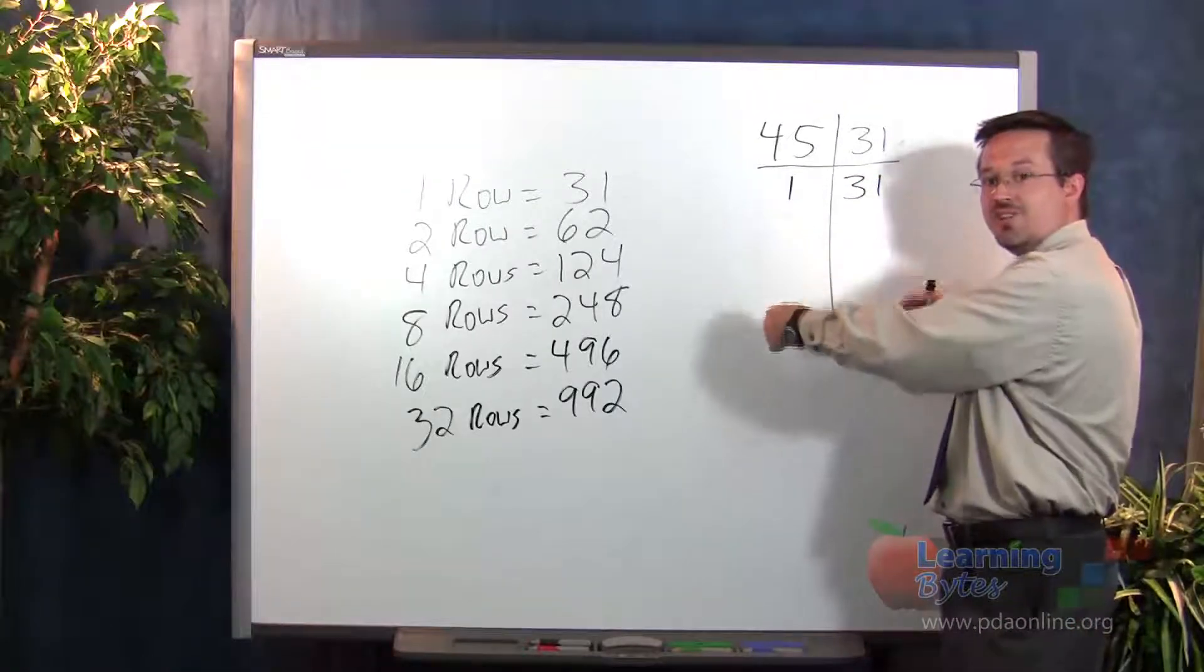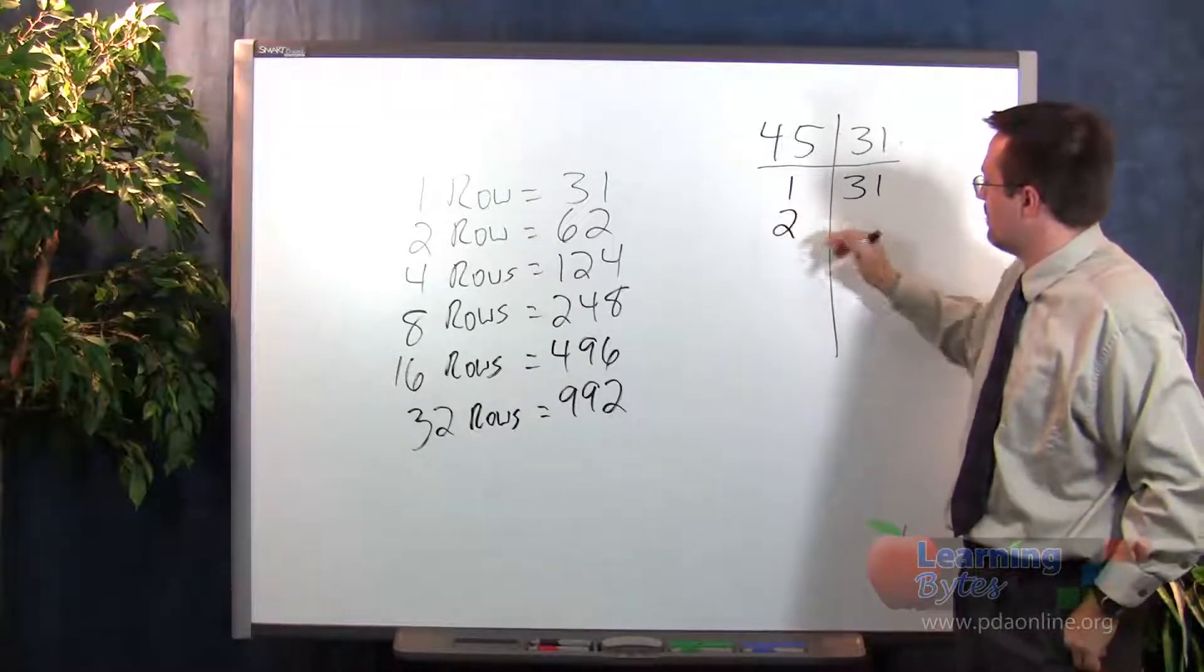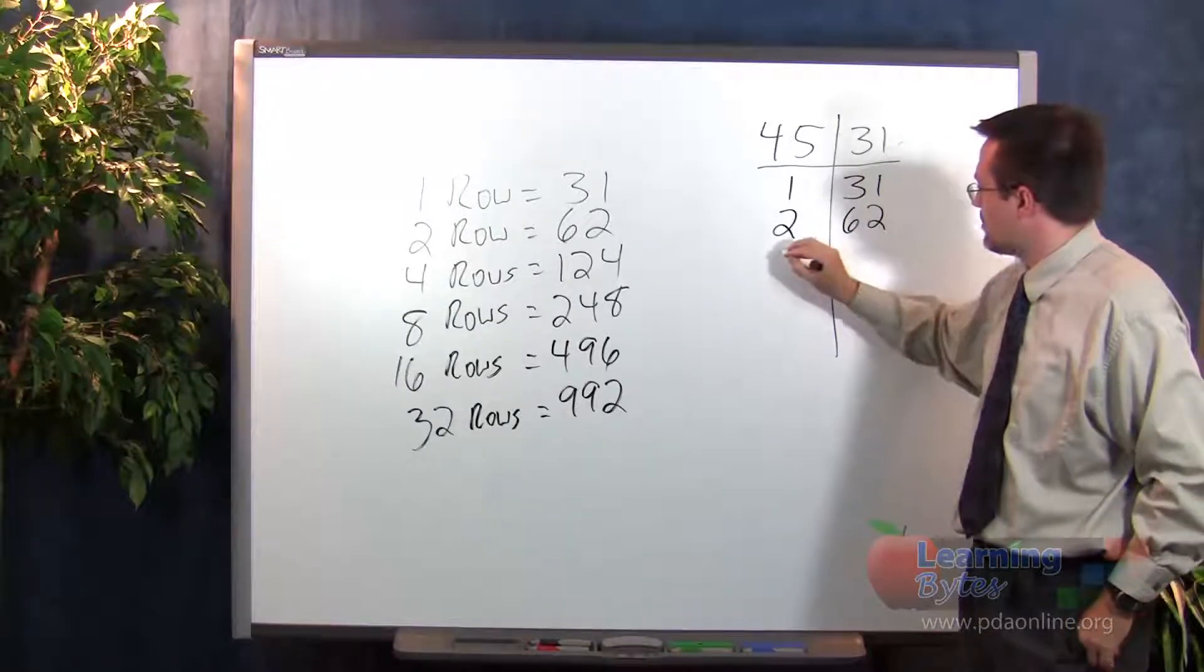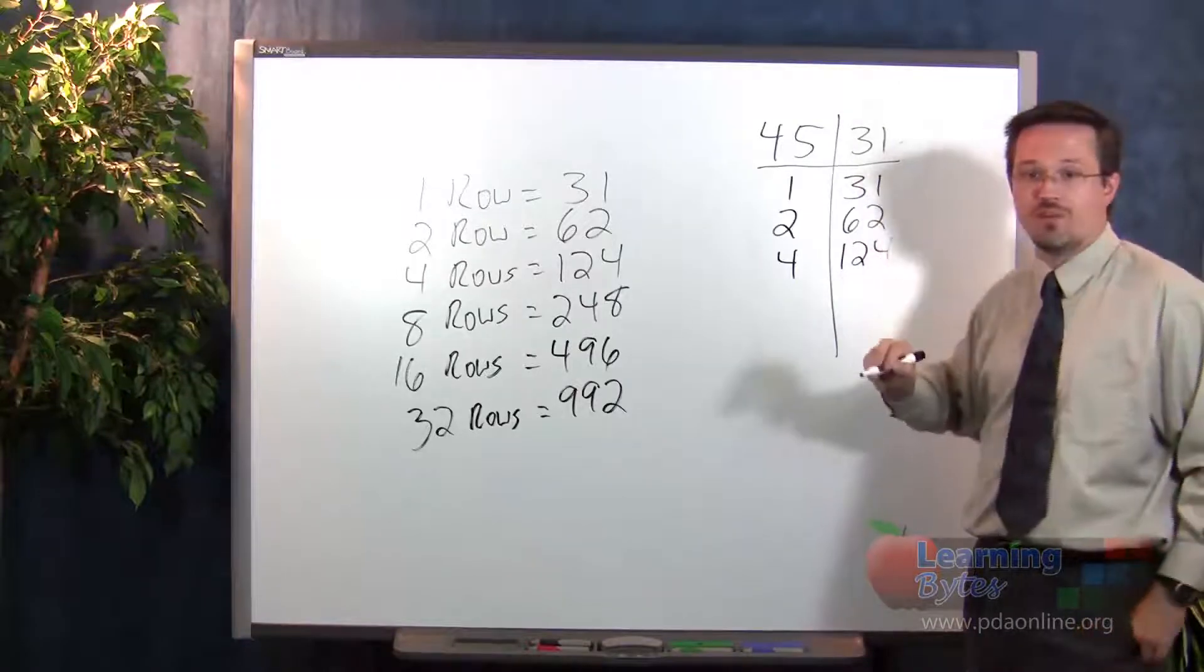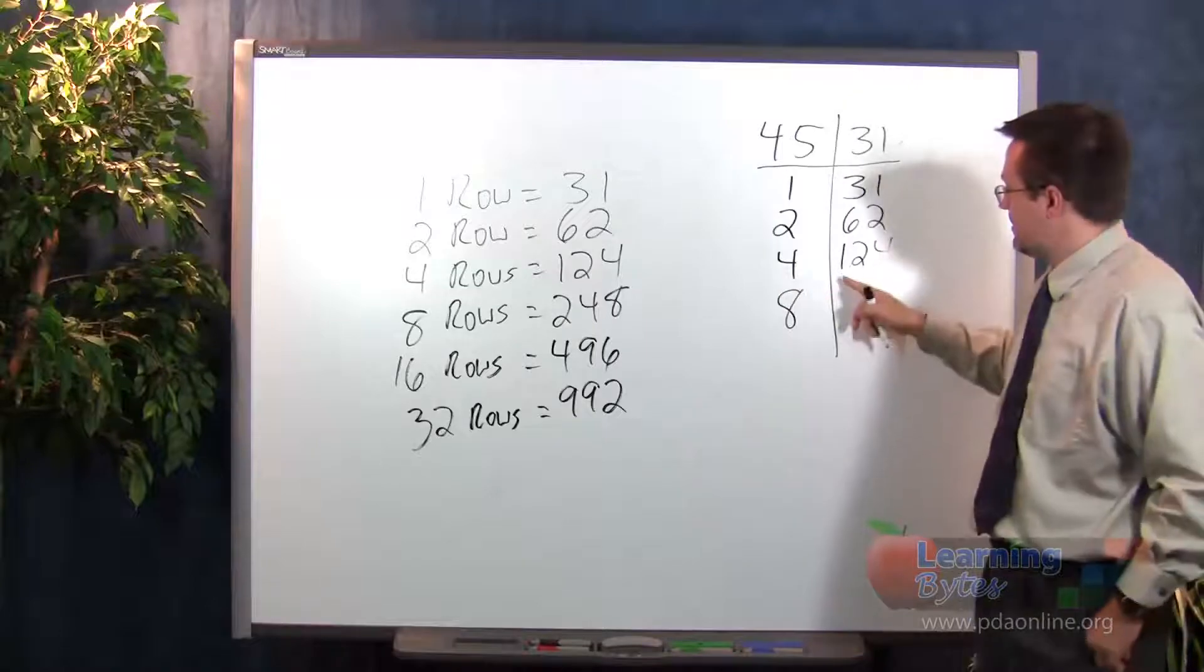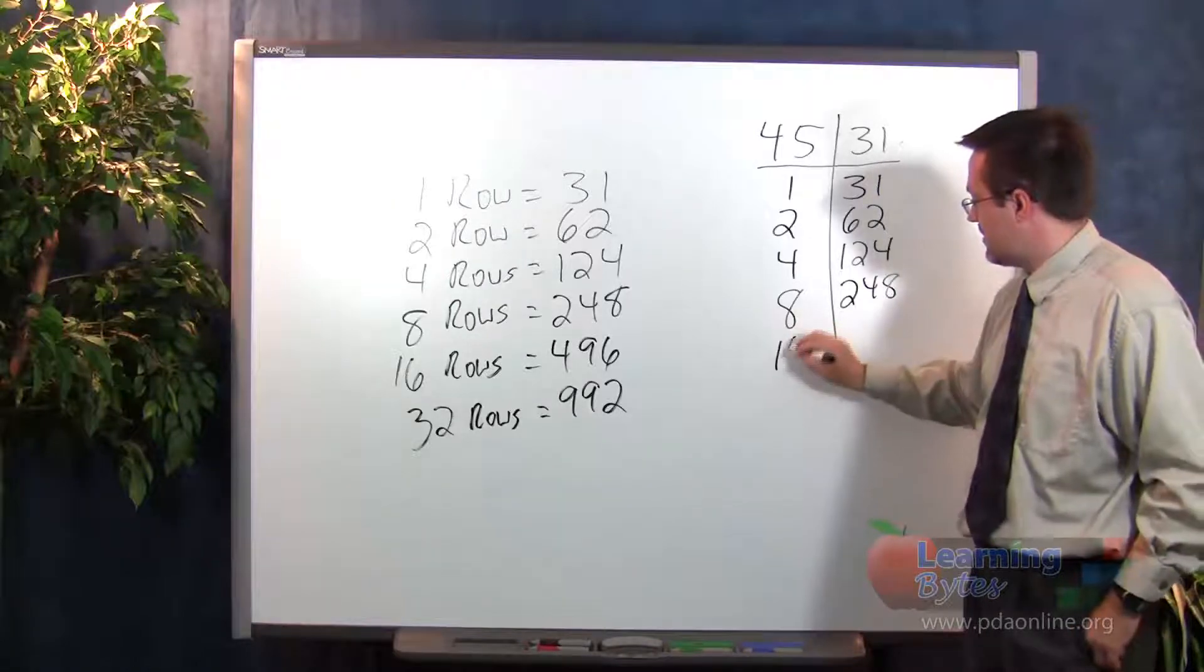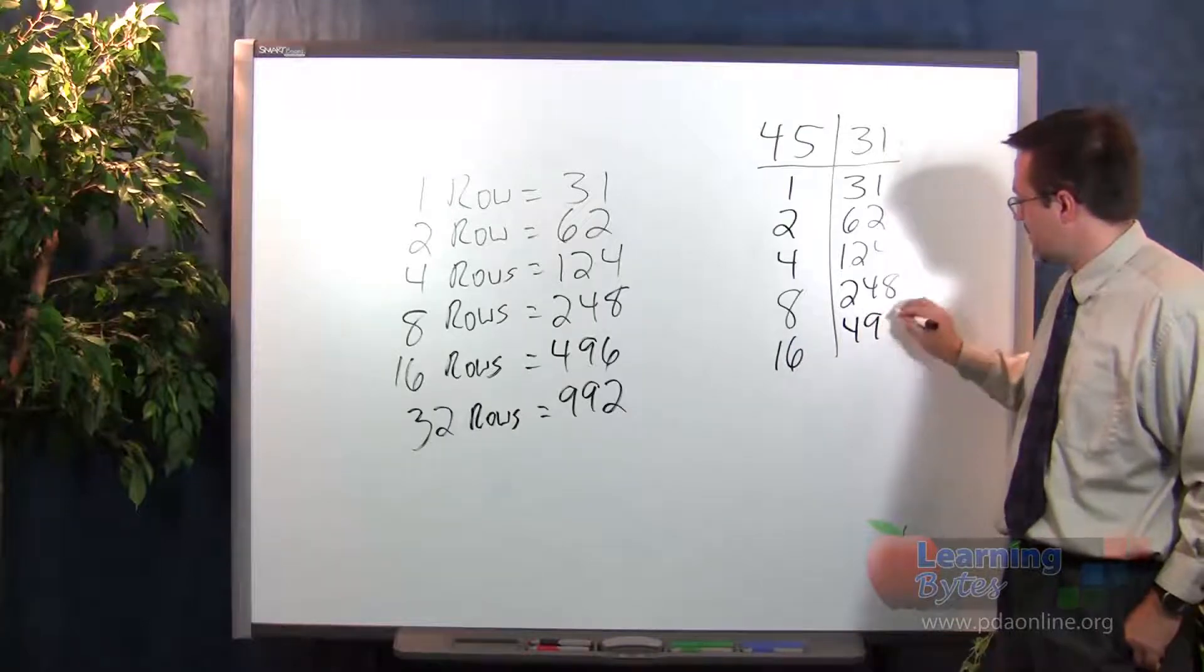We will then double for each successive row. So if we double 1, we have 2. If we double 31, we will have 62. Doubling 2 will give us 4. And doubling 62 will give us 124. If we double 4, we will have 8. Doubling 124 will give us 248. Doubling 8 will give us 16. Doubling the 248 will be 496.